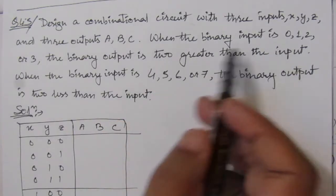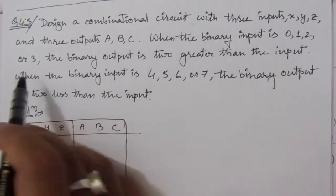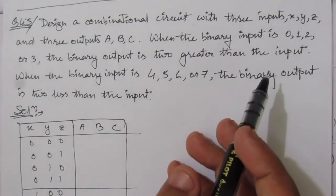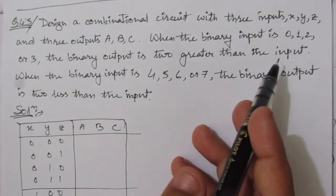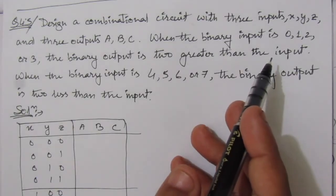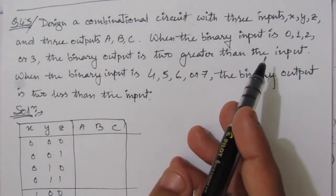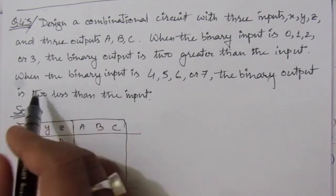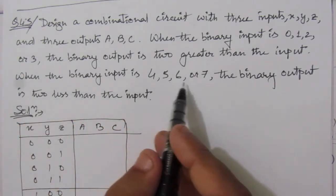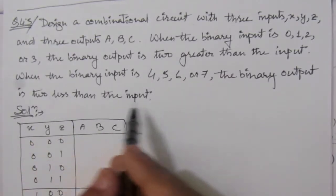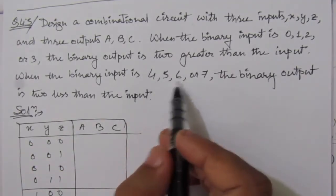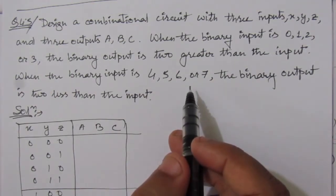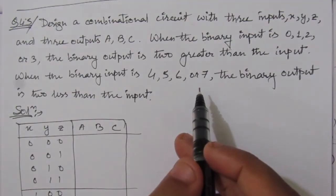We are given these conditions. When the binary input is 0, 1, 2, or 3, then the binary output is 2 greater than the input. That means if we have input 000, then the output will be 010 — so 0 is converted to 0 plus 2. And if the input is 3, then we add 2 and write 5 in the outputs. When the binary input is 4, 5, 6, or 7, then the binary output is 2 less than the input — we subtract 2 and represent it in the output.